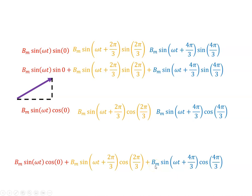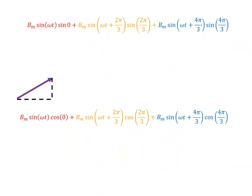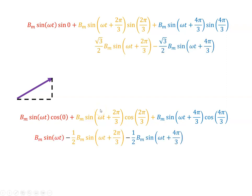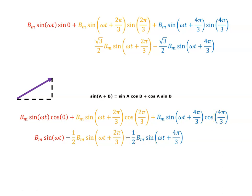Evaluating known values: sin(0) = 0 so that term disappears. sin(2π/3) = √3/2 and sin(4π/3) = −√3/2, so the vertical equation reduces. For the horizontal components: cos(0) = 1, cos(2π/3) = −1/2, and cos(4π/3) = −1/2.